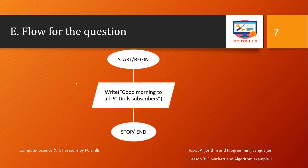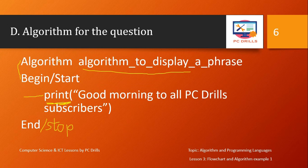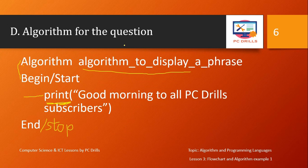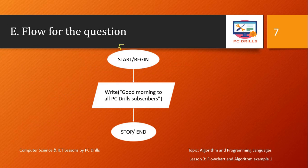Next we have the flowchart for the same question. For the flowchart you use symbols — we talked about the flowchart symbols previously. We had the oval/sphere shape that deals with begin and end statements. For the flowchart you don't usually put the name with a special symbol, but you can just put the name above — for example 'flowchart to display a phrase'. For the algorithm you put the word 'algorithm' and the name; for the flowchart you just put the name above.